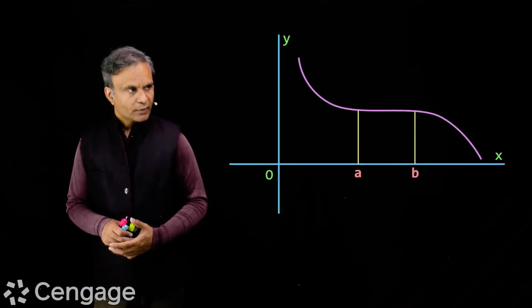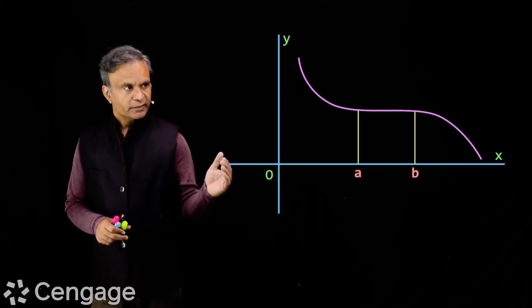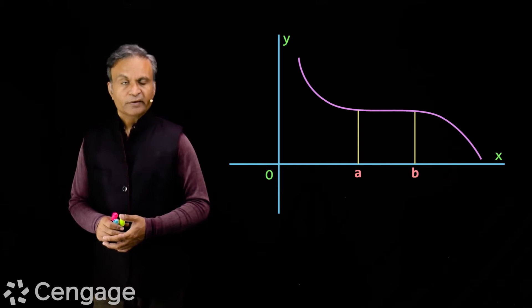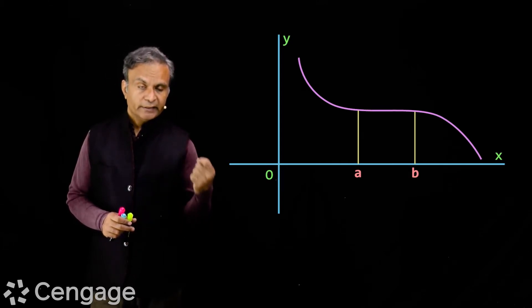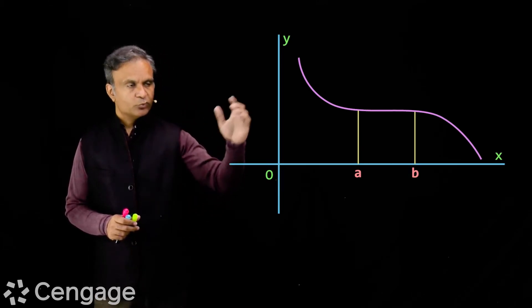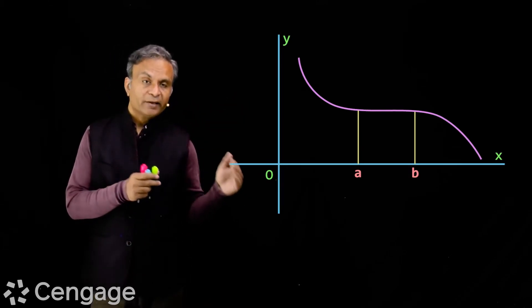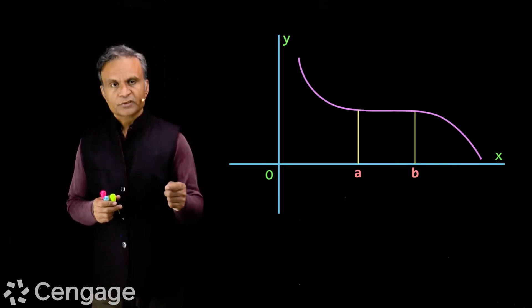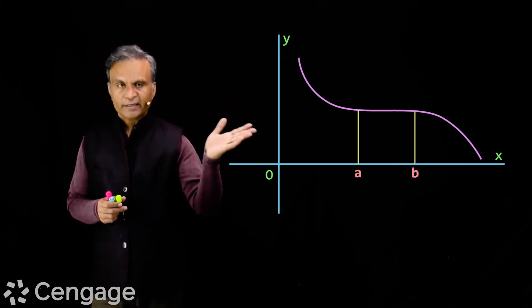Now let us see what a decreasing function is. Consider a function y = f(x) whose graph is such that for x less than a and x more than b the function decreases — strictly decreasing in those regions. Between a and b the function is constant, and the graph is parallel to the x-axis.